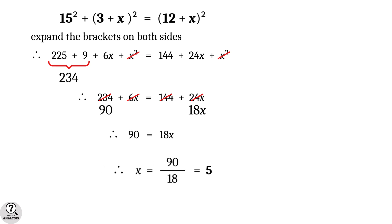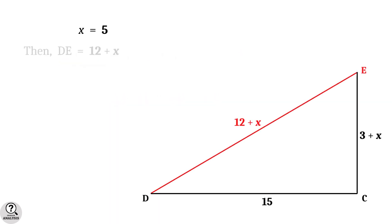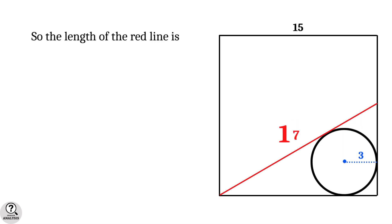What does it mean? We have the red line DE equal to 12 plus X. That implies DE equal to 12 plus 5 which is equal to 17 units. Therefore length of the red line is 17 units and that is the solution we are looking for.